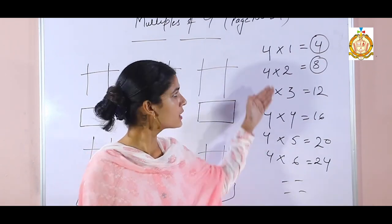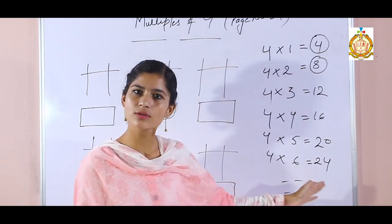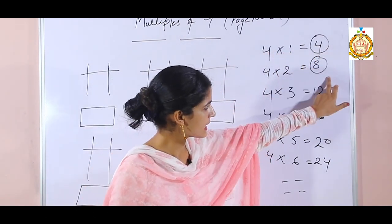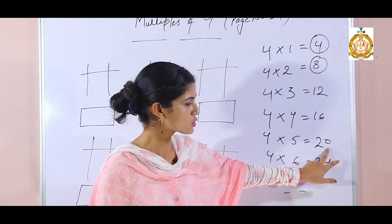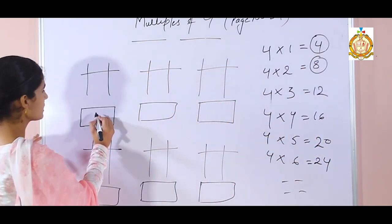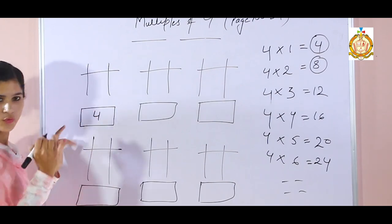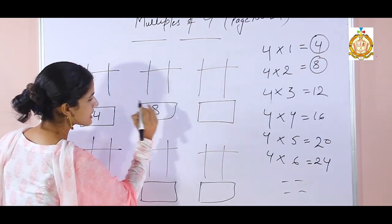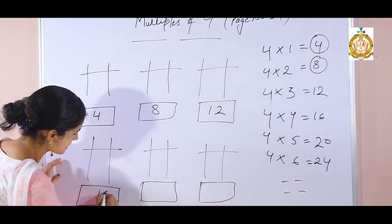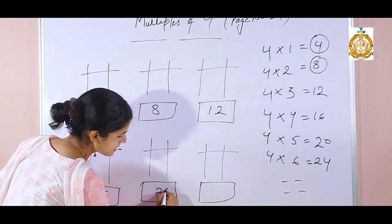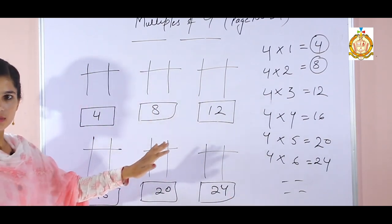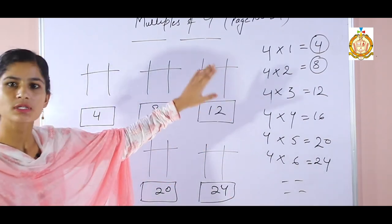The tables you are doing in class — 4's table — that is called the multiples of 4. The multiples of 4 are 4, 8, 12, 16, 20, 24. These numbers you have to write here. First multiple is 4, second is 8, third is 12, fourth is 16, fifth is 20, sixth is 24. Multiples means table of 4. If it says multiples of 6, then use table of 6.